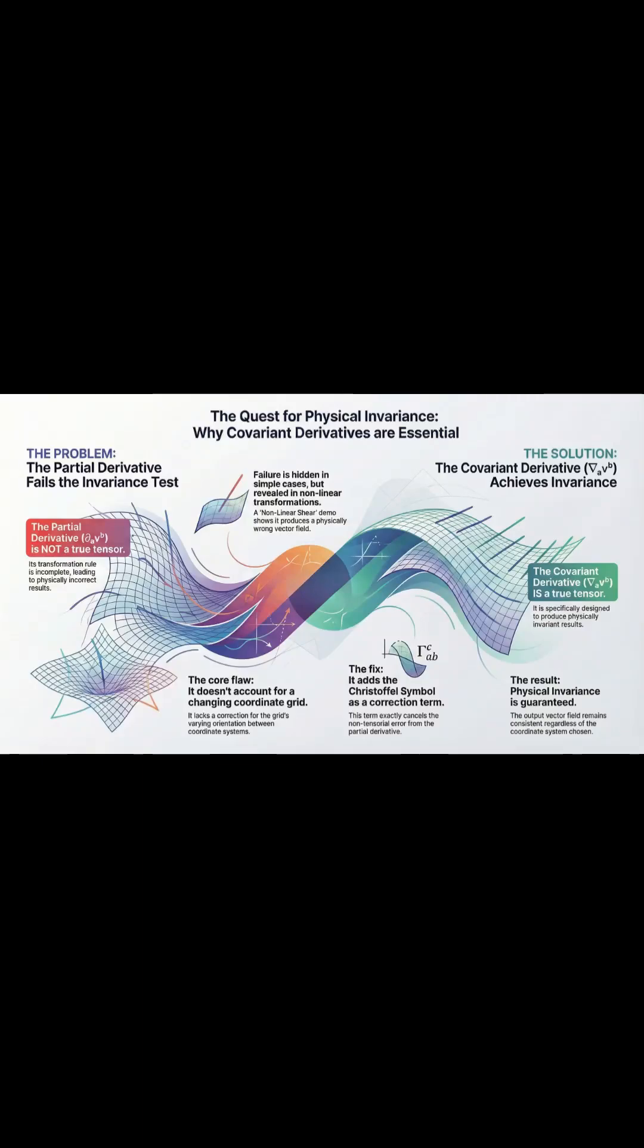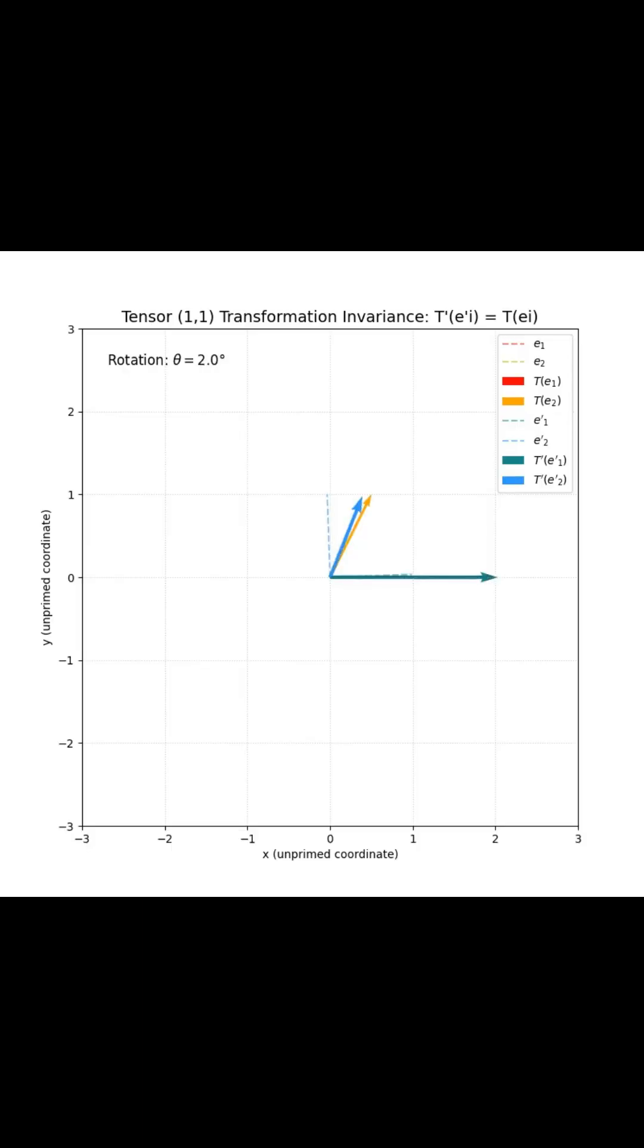This is the Brief on Covariant Derivatives and Physical Invariants. So let's talk about the Covariant Derivative. It's this really crucial mathematical tool that makes sure physical laws don't just break when you start looking at them through a weird, distorted lens, like a stretched or bent coordinate system.